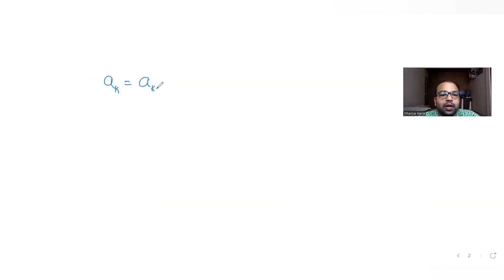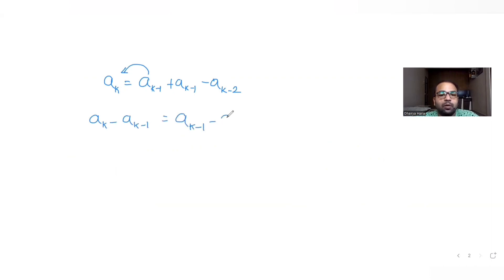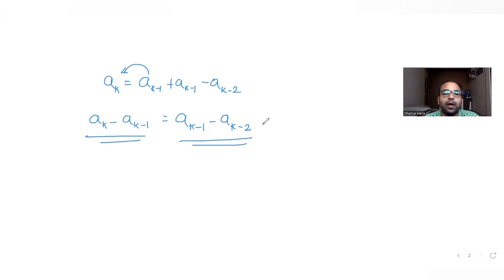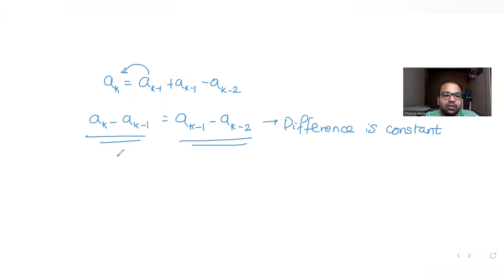If you generalize the statement, A_K equals A_{K-1} plus (A_{K-1} minus A_{K-2}). Rearranging, you get A_K minus A_{K-1} equals A_{K-1} minus A_{K-2}. So for all values of K from 3 to 11, the difference between consecutive terms is a constant value. When the difference between consecutive terms is constant for all 11 terms, the entire sequence is in arithmetic progression.